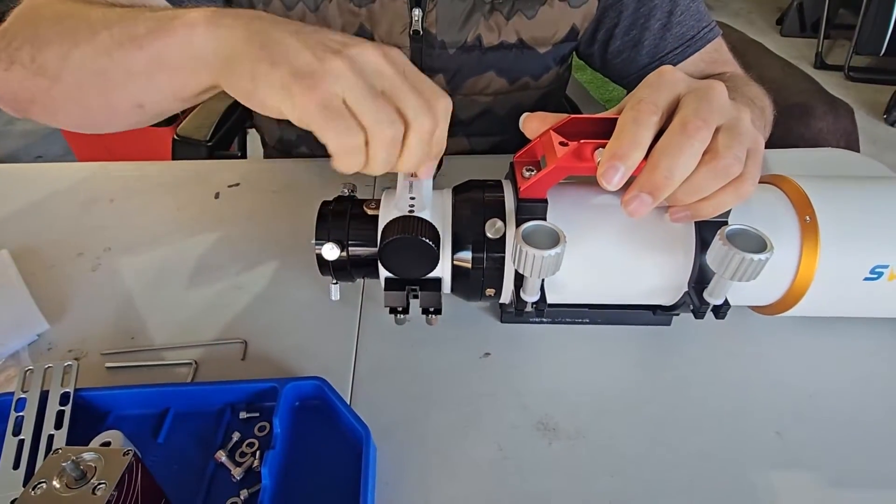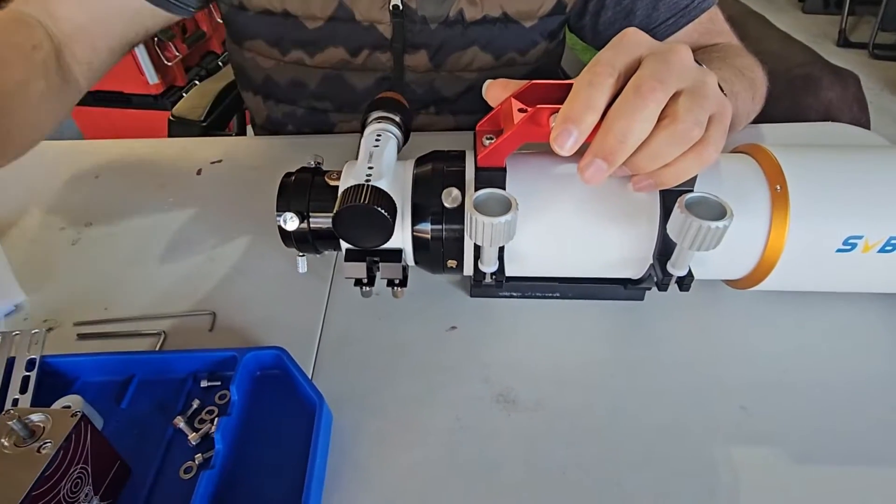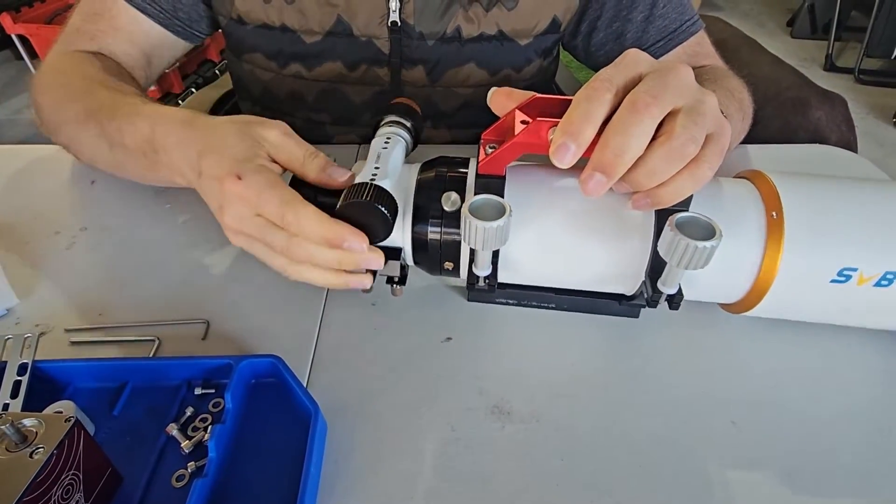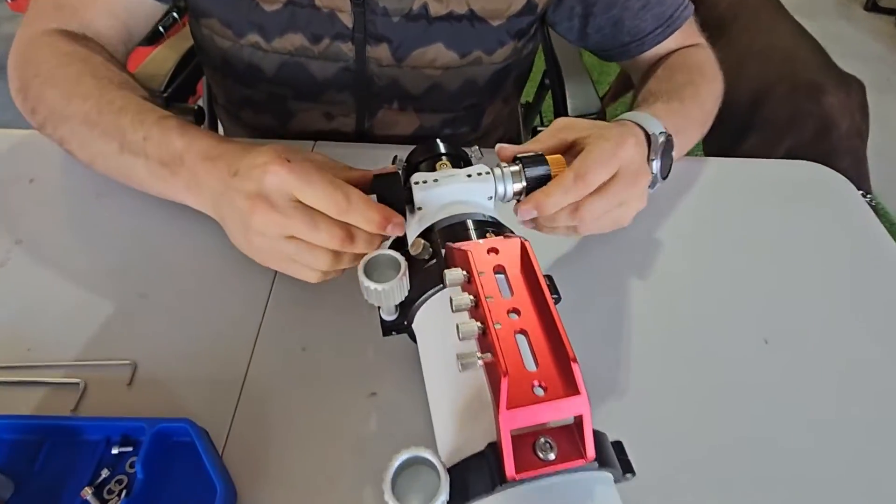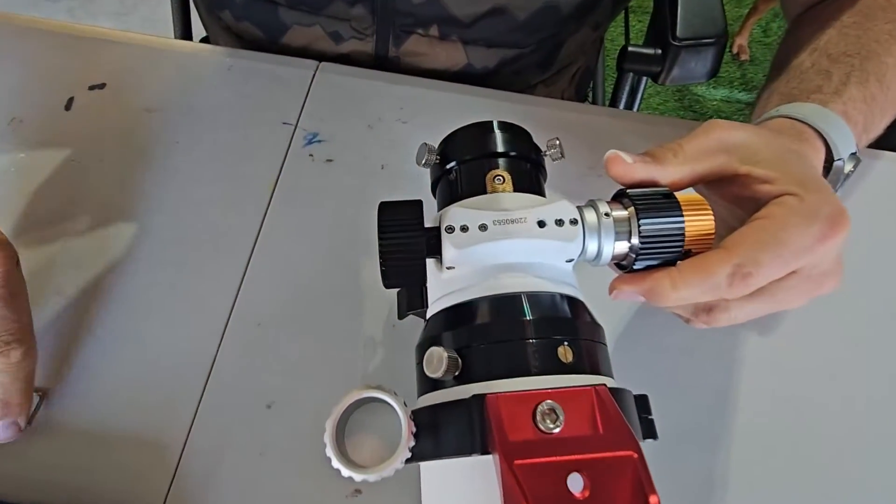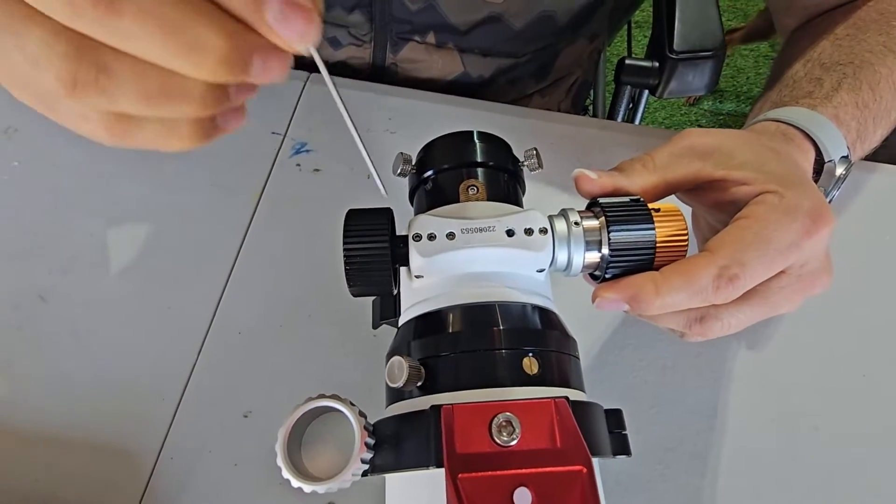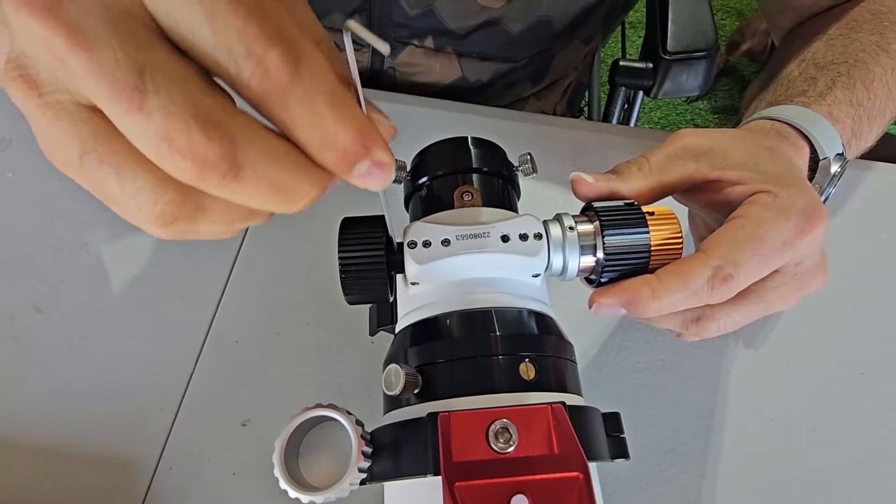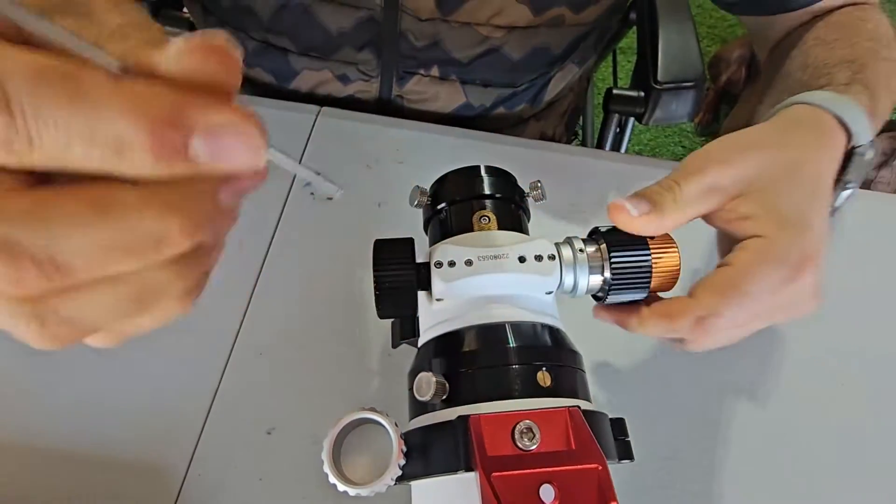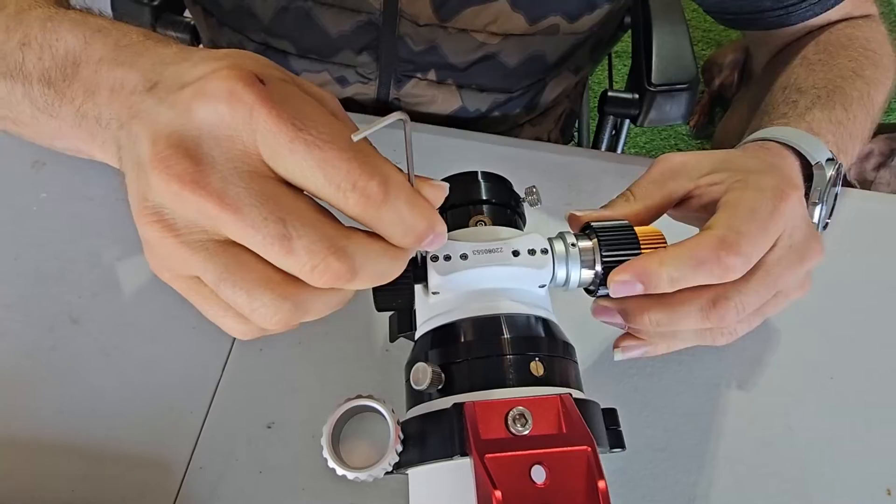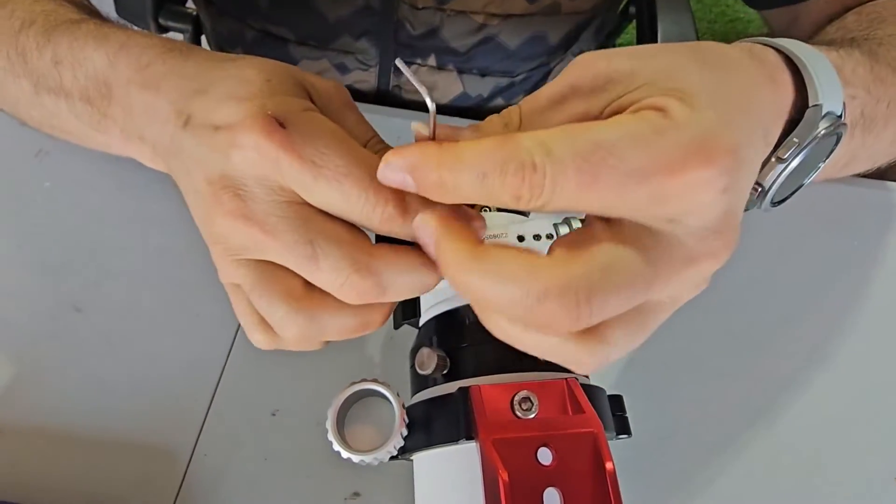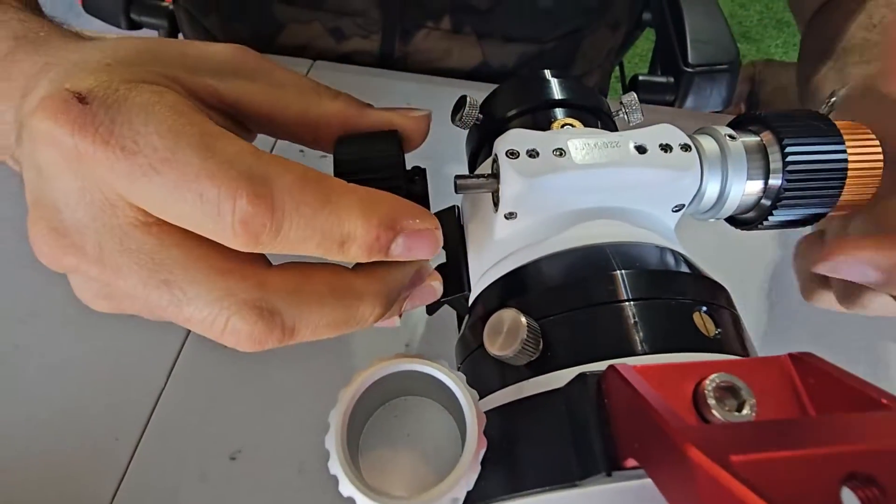I'll take the lock screw out, set that in our parts tray and I'm going to take this focuser knob off. There's a couple of screws down in here, set screws, they're grub screws is what they call them but they hold that in place. We'll just loosen that up. There should be another one. There it is. Loosen that up and this should just slide right off.